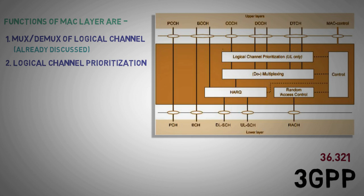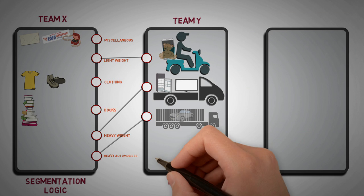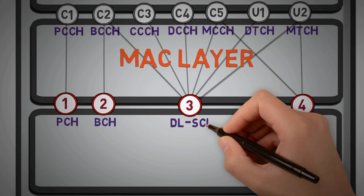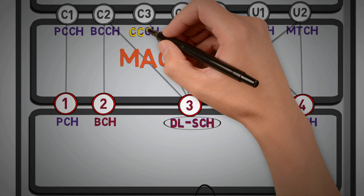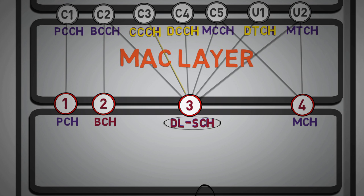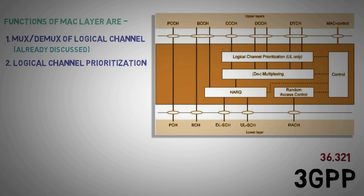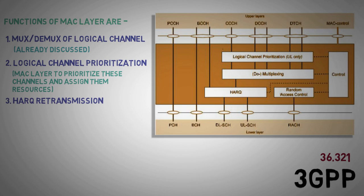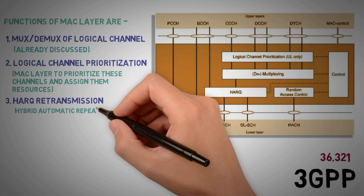We have shown in the example earlier, that sometimes many dissimilar items were grouped in the dedicated transport group. Similarly, in shared transport channel for uplink and downlink, multiple logical channels are mapped. It is the work of MAC layer to prioritize these channels and assign them resources accordingly. 3. Hybrid ARQ retransmission, which stands for hybrid automatic repeat request.